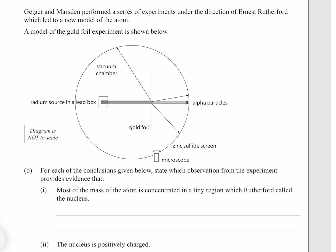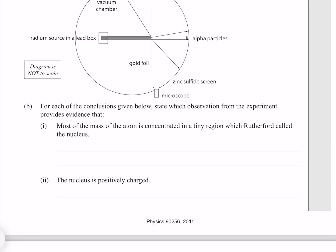Geiger and Marsden performed a series of experiments under the direction of Ernest Rutherford, which led to a new model of the atom. A model of the gold foil experiment is shown below. For each of the conclusions given below, state which observation from the experiment provides evidence that most of the mass of the atom is concentrated in a tiny region, which Rutherford called the nucleus.